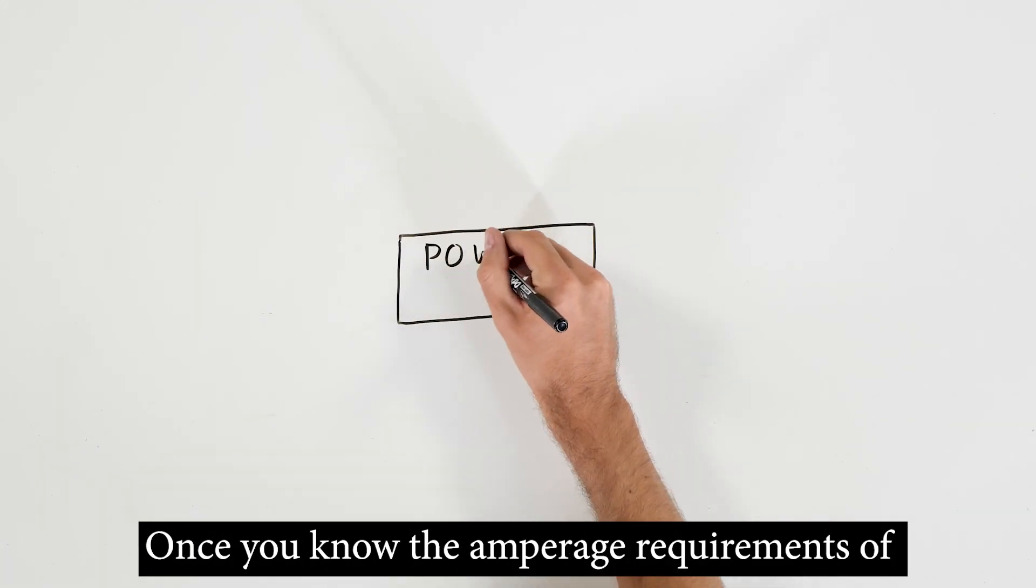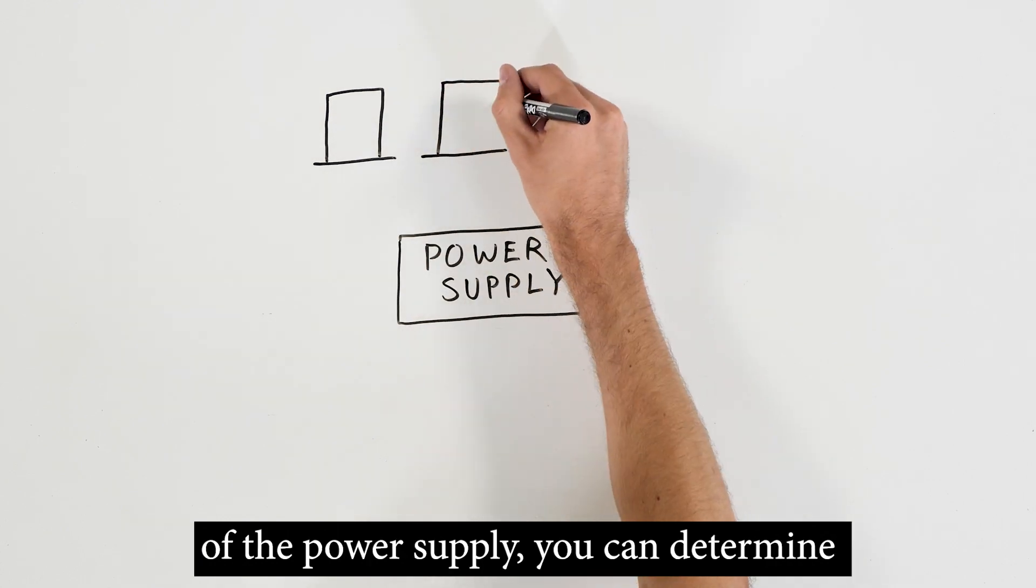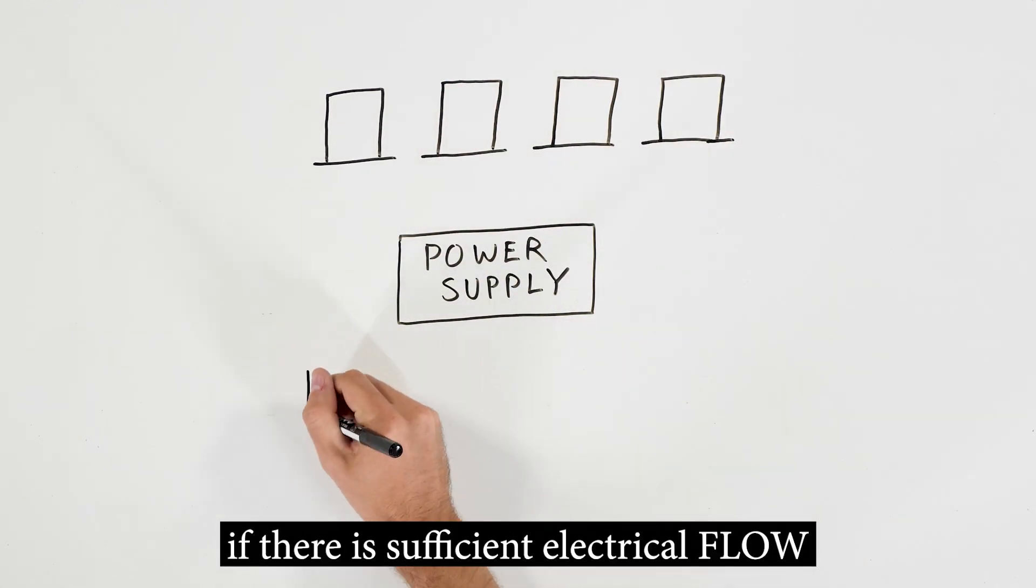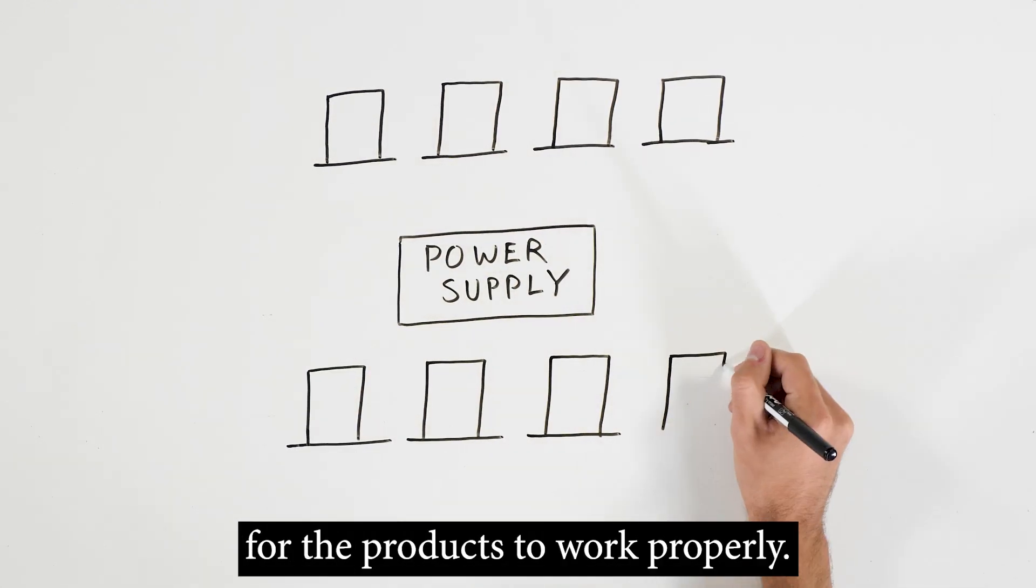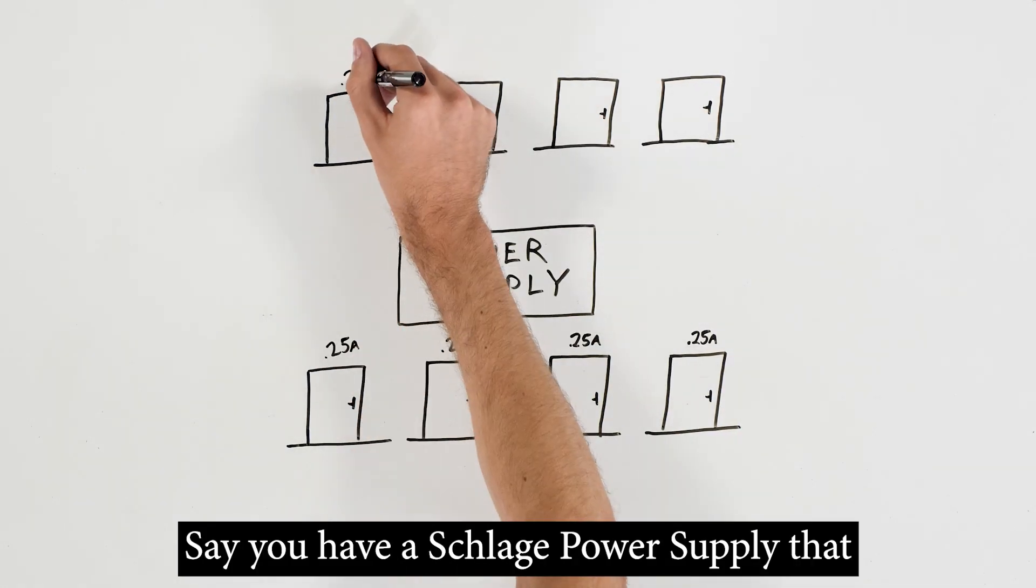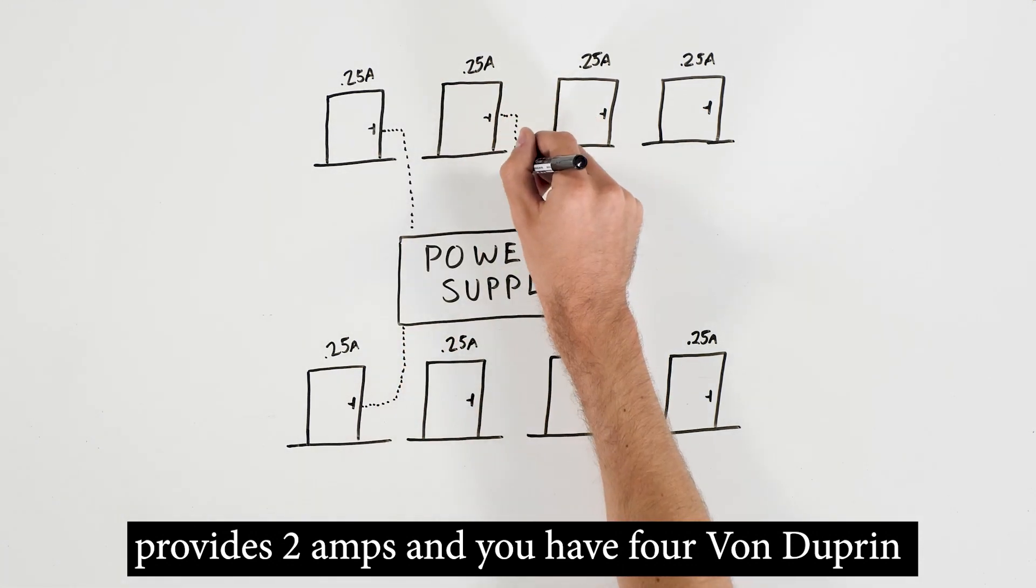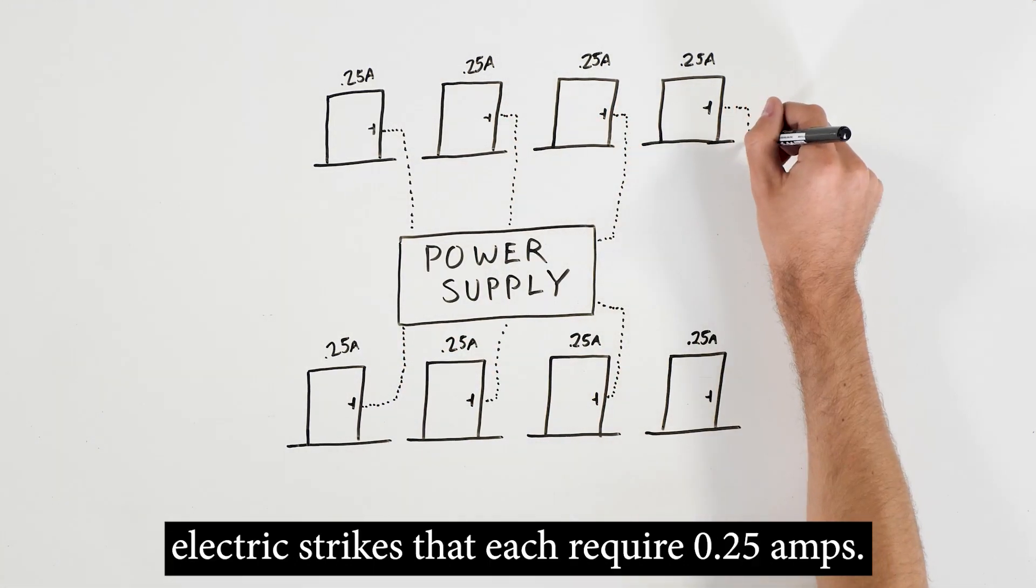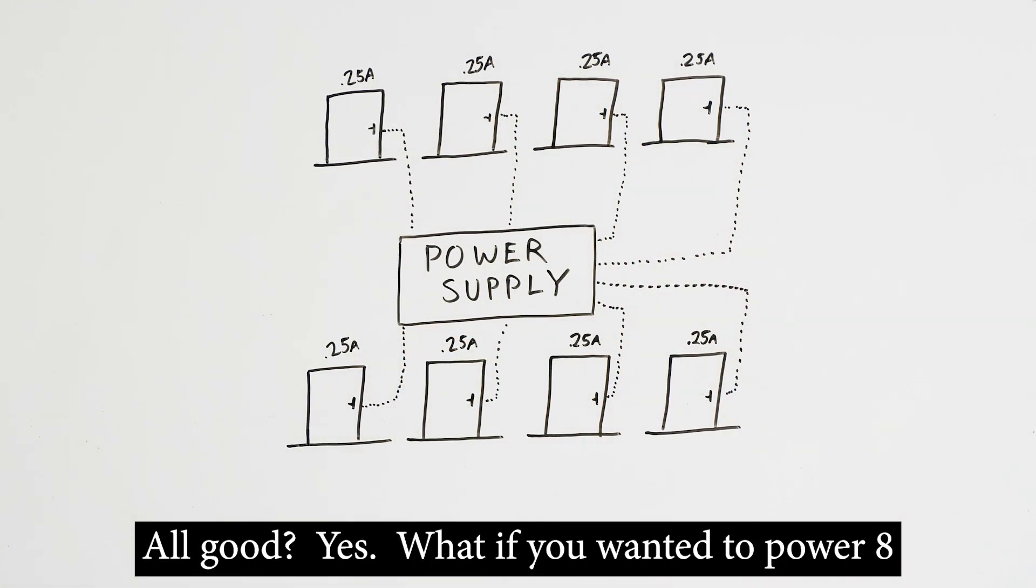Once you know the amperage requirements of the electrified products and the amperage rating of the power supply, you can determine if there is sufficient electrical flow for the products to work properly. Let's try it. Say you have a Schlage power supply that provides 2 amps, and you have 4 Von Dupren electric strikes that each require 0.25 amps. All good? Yes.